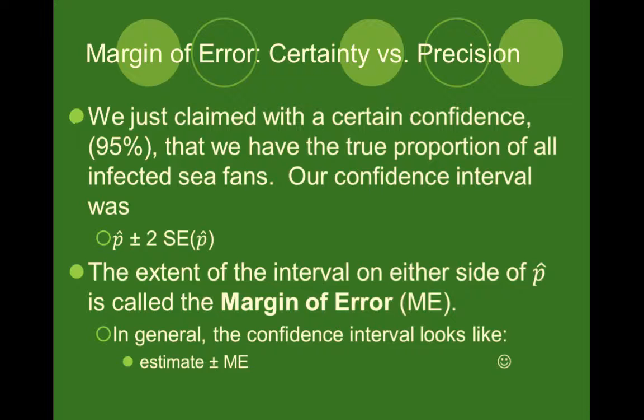In general, a confidence interval looks as follows: it's your estimate — in our case our sample proportion — plus and minus your margin of error, where your margin of error is how many standard deviations you are from the mean times the standard error. The margin of error is how far you are above and below what your sample proportion was.